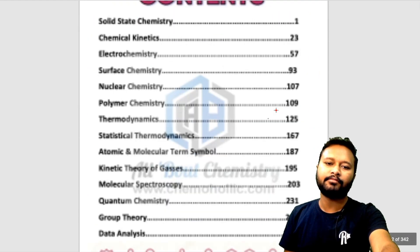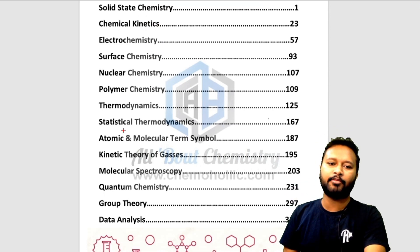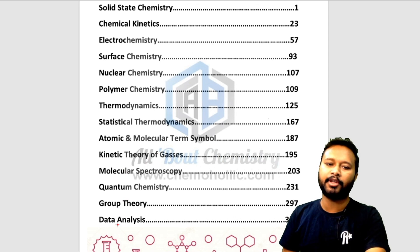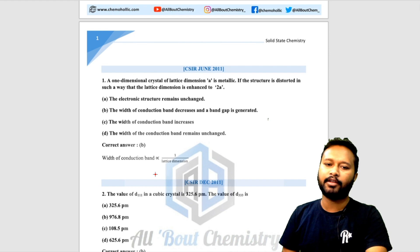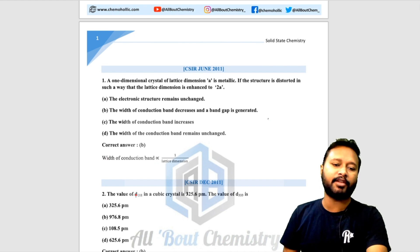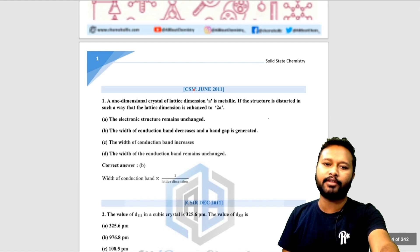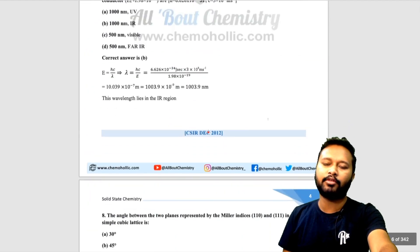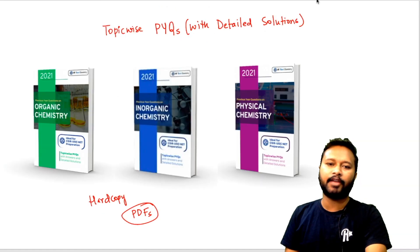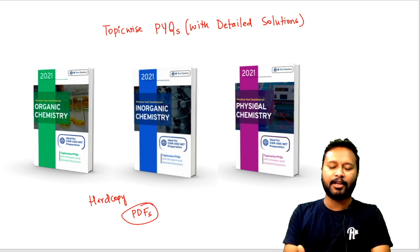The physical chemistry file similarly covers Solid State Chemistry, Chemical Kinetics, Electrochemistry, Surface Chemistry, Nuclear Chemistry, Polymer, Thermodynamics, Statistical Thermodynamics, Atomic and Molecular Term Symbols, Kinetic Theory of Gases, Molecular Spectroscopy, Quantum Chemistry, Group Theory, and Data Analysis. In the same fashion, the question is shown, the correct option is indicated, and a short explanation is given where detailed explanation is not needed. All questions are year-wise — you can see CSI June 2011, CSI June 2012, December 2012, and so on.